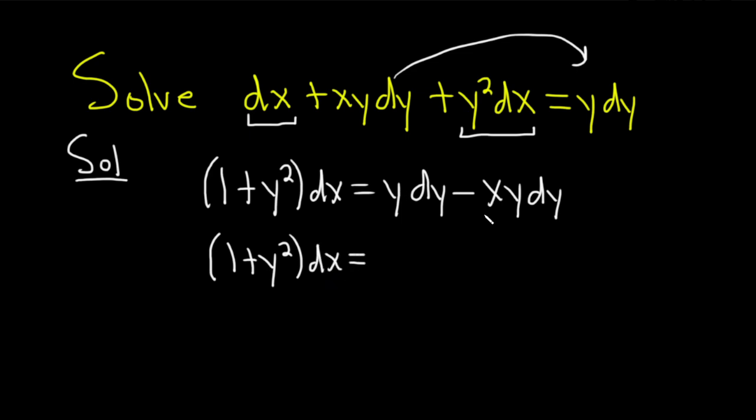And that's equal to, so here we can pull out that dy. So we'll get, we can pull out a y as well. y, 1 minus x, dy. So what I did there was I pulled out the y. I pulled out the dy, and we're left with 1 minus x.